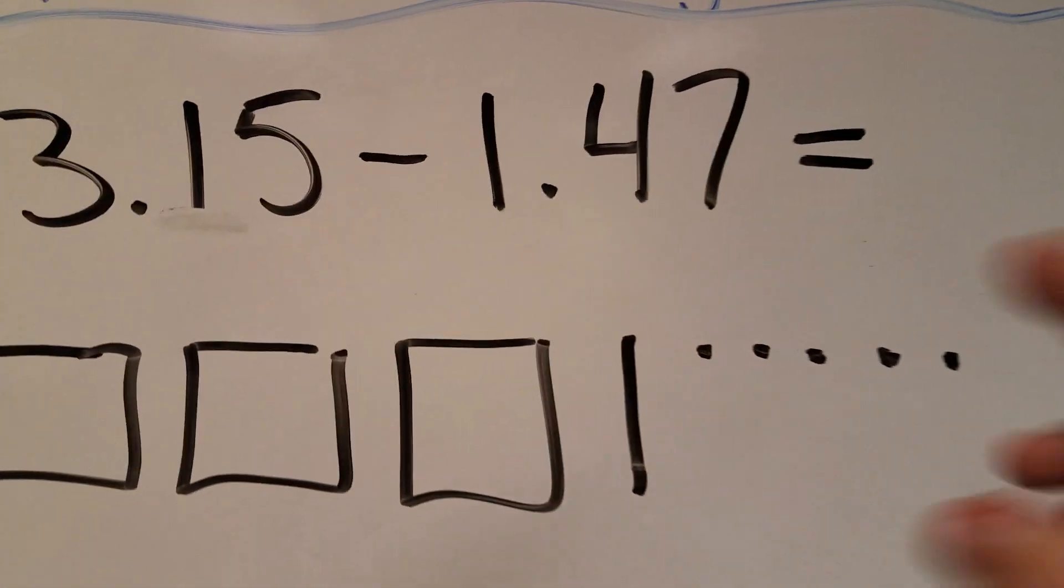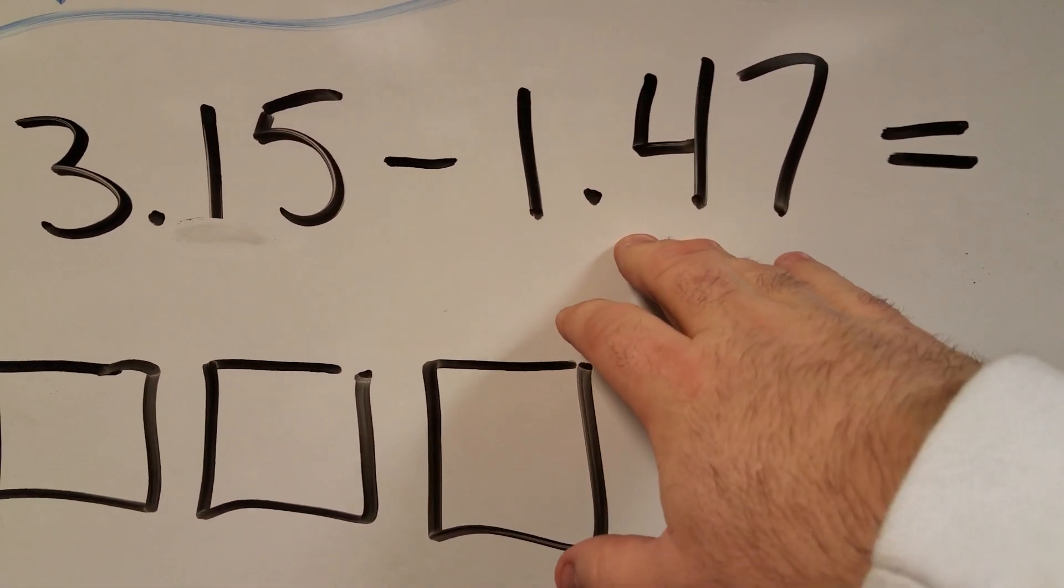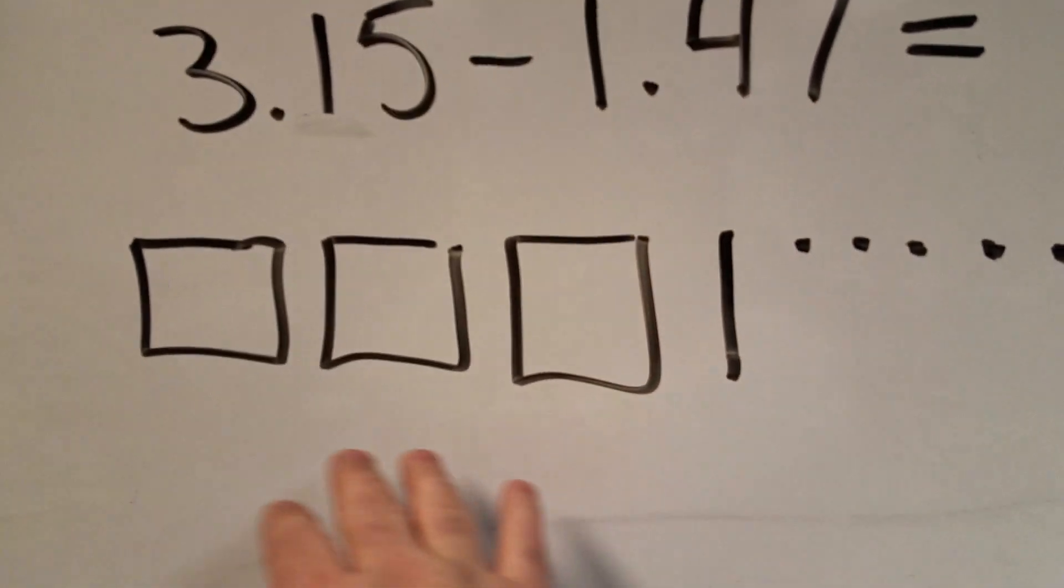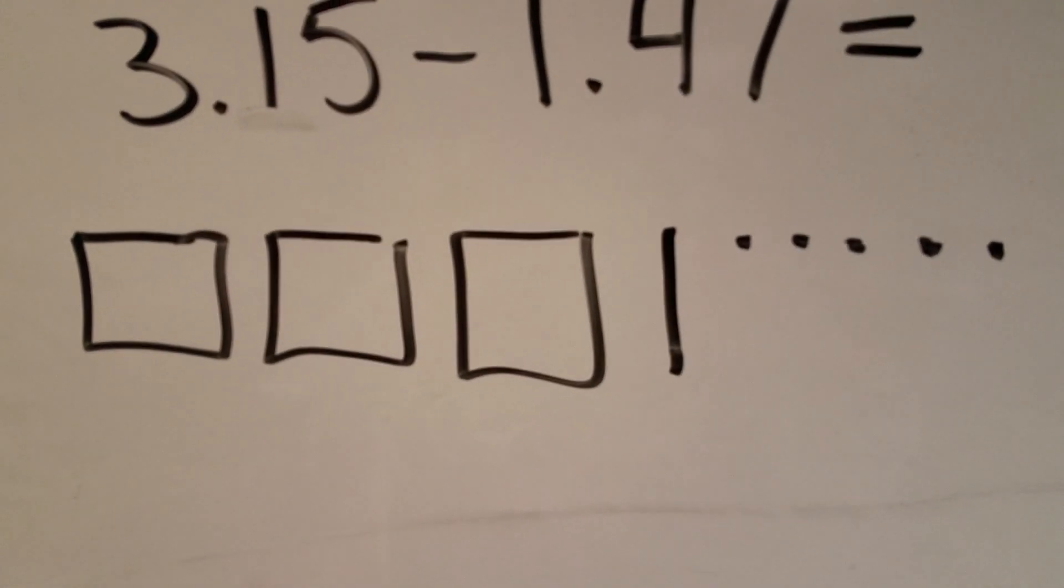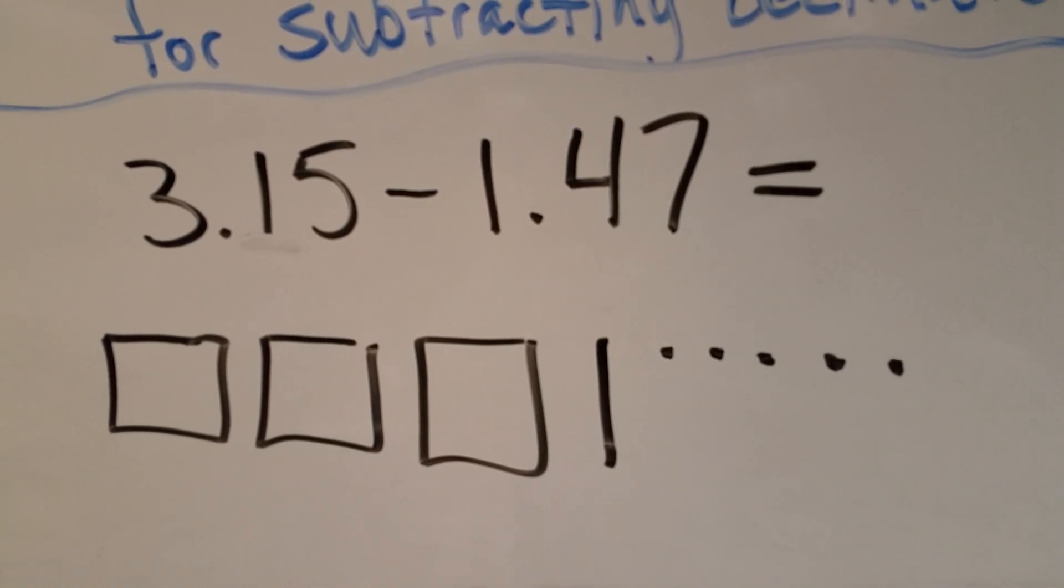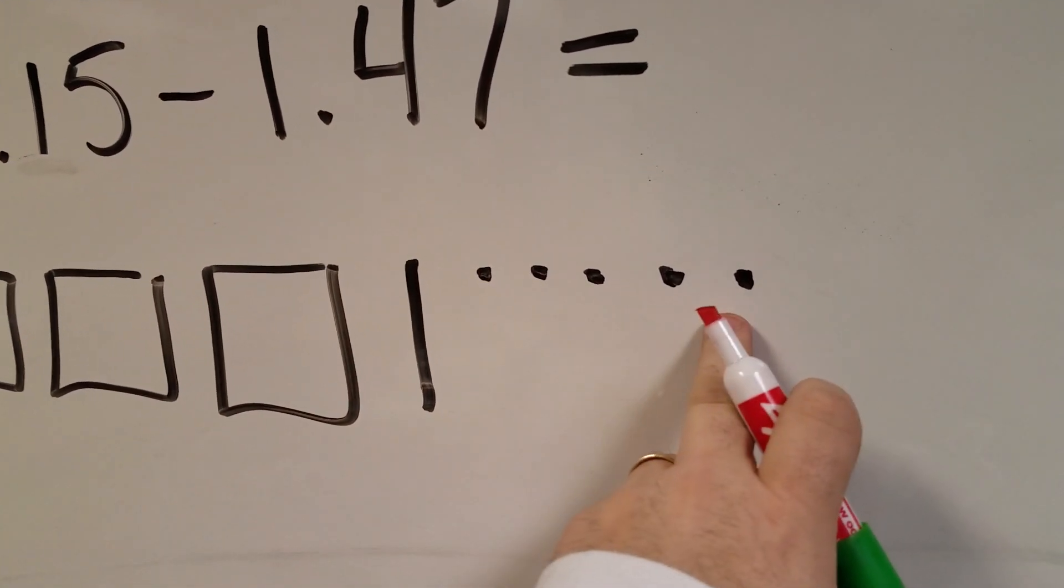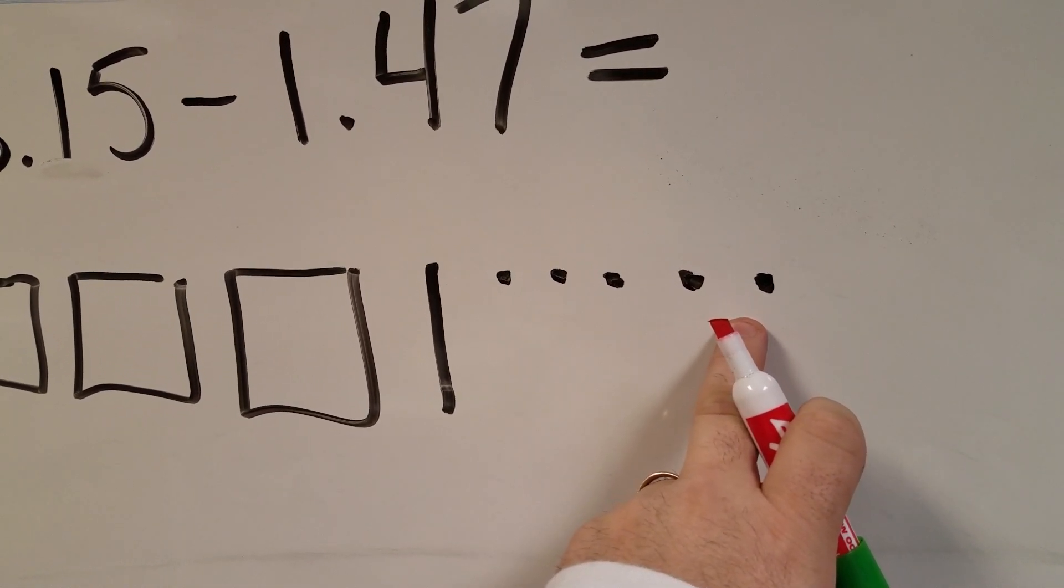Now what I'm going to do is I'm not going to draw this like we did in the addition. I'm actually going to take one and forty seven hundredths away from this part of the model. So the first thing I say to myself is can I take seven hundredths away from these five? I cannot.